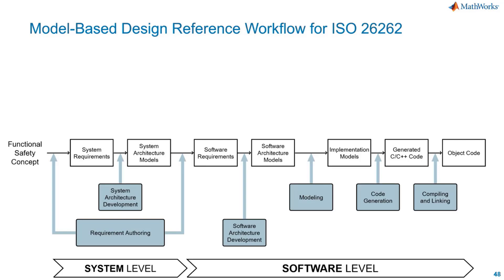For a complicated system, we should decompose our scope of work to different levels. We always start from the vehicle level, but that's not the focus today. The focus today is the system level as well as the software level, and the software level is associated with Part 6 in the ISO 26262 standard.